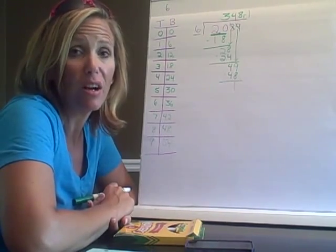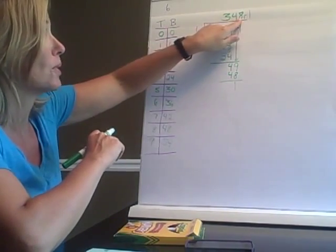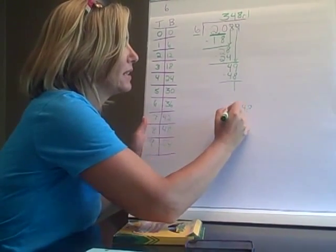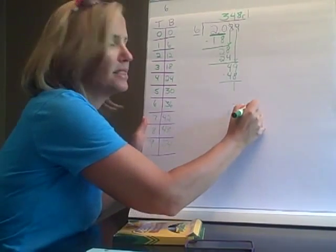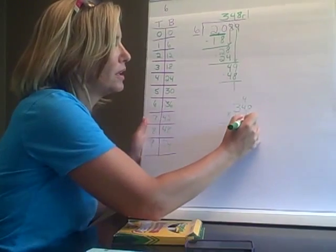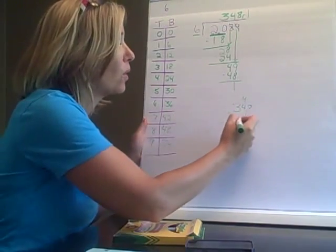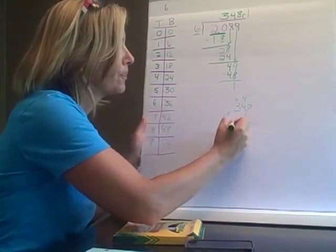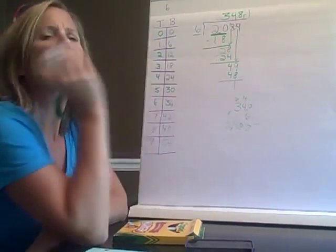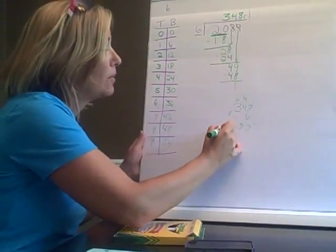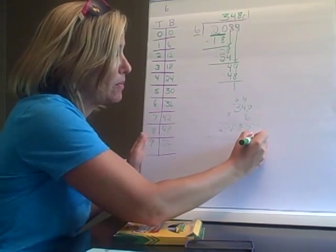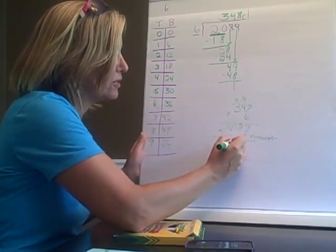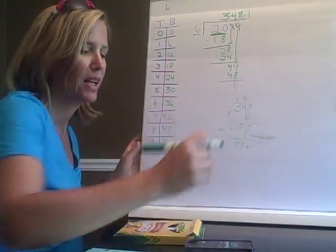Step ten you need to check your answer. And you do that by multiplying. So I'm going to take my quotient which is three hundred forty-eight and I'm going to multiply that by six. Three hundred forty-eight times six. Six times eight is forty-eight. Carry my four. Six times four is twenty-four plus four is twenty-eight. So that's right. It's not my dividend. Until I remember oh that's right I have the remainder of one. So then I'm going to take the one and add that to it. So I'm adding my remainder. And when I add it I get two thousand eighty-nine. Perfect check.